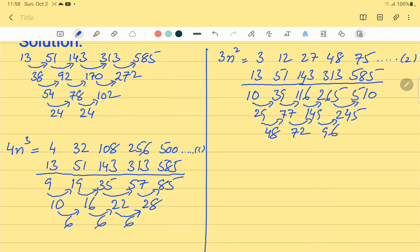Still, the differences are not the same. So we have to repeat just that one more time. 72 minus 48 is 24. And 96 minus 72 is equal to 24.